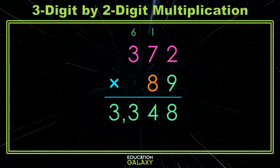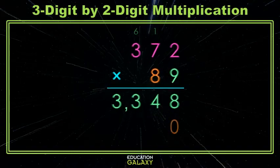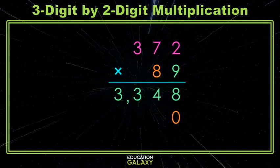So now we move to the tens place, the 8. So we are multiplying 372 by the 8, but remember that 89 is really 80 plus 9. So we're multiplying 372 by 80, and that's why we put that 0, and sometimes we call it a placeholder.